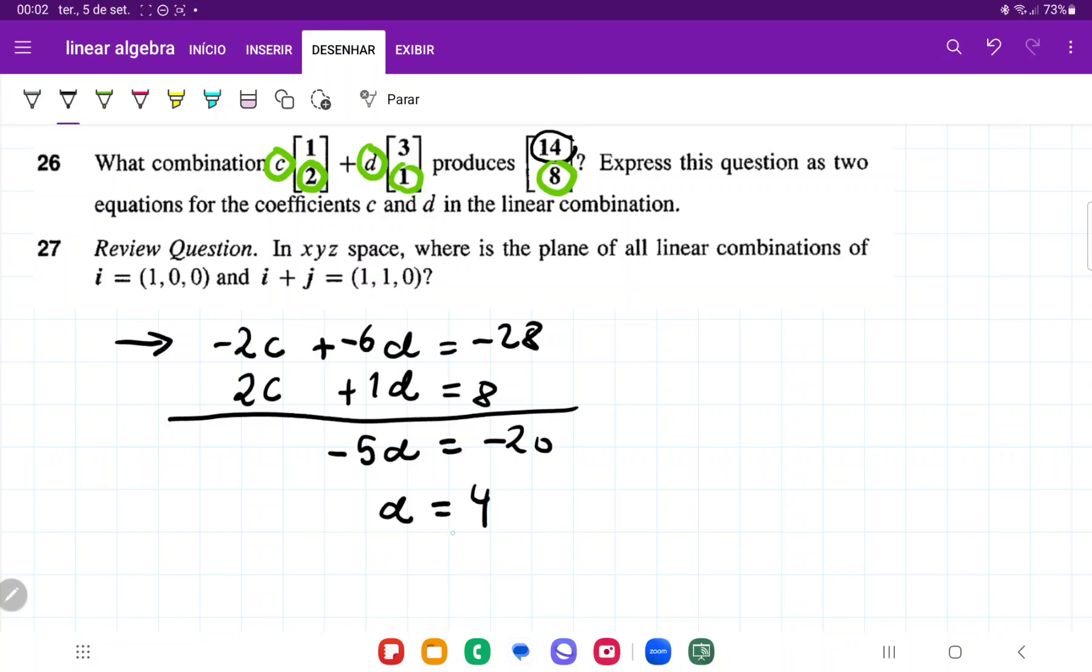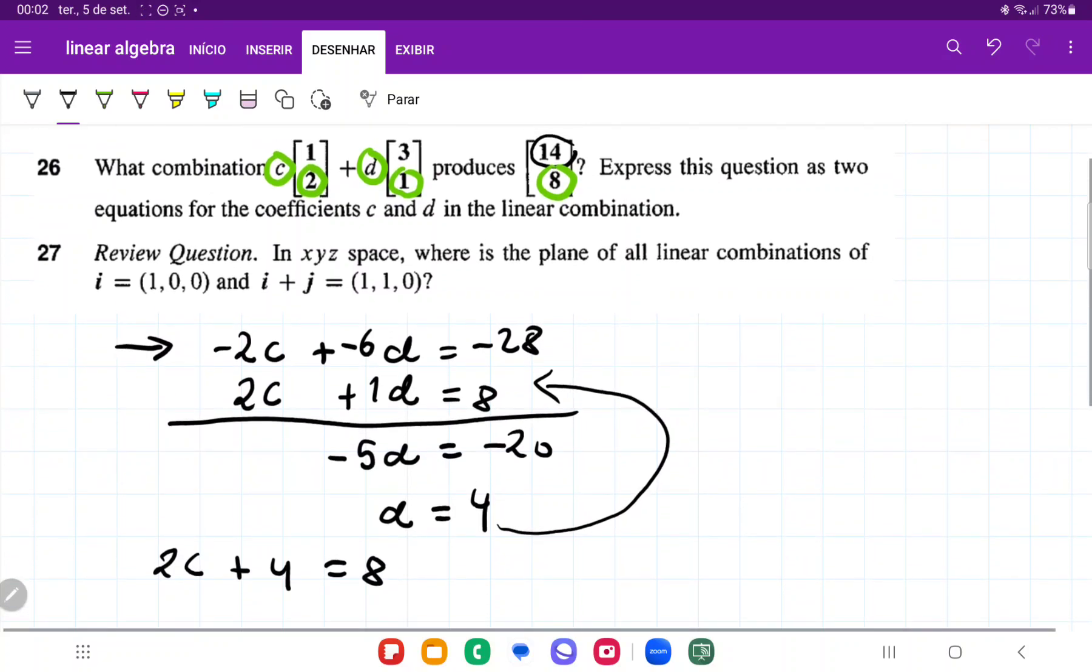If d equals 4, now we plug this into that equation. So we get 2c plus 4 equals 8. Bringing the 4 to the other side, 2c equals 4, and therefore c equals 2.